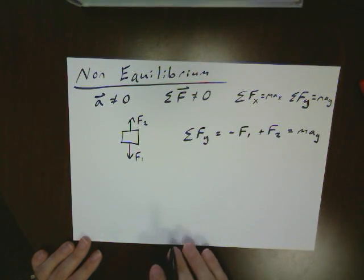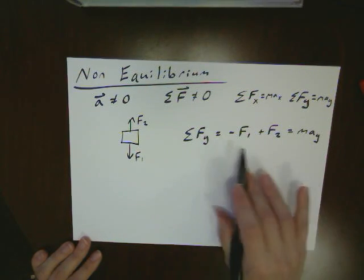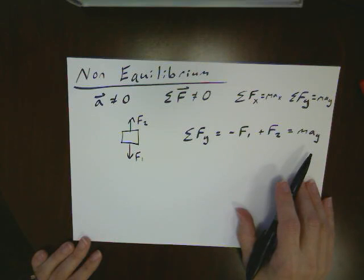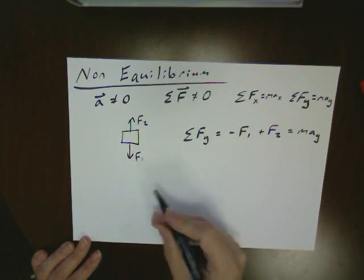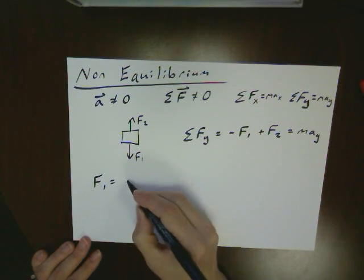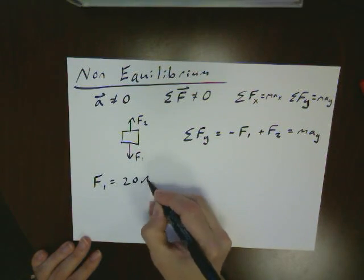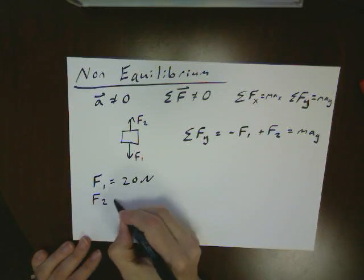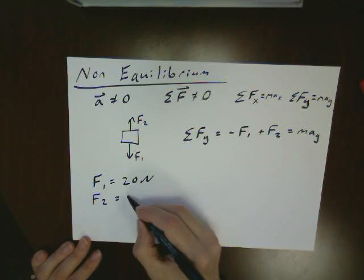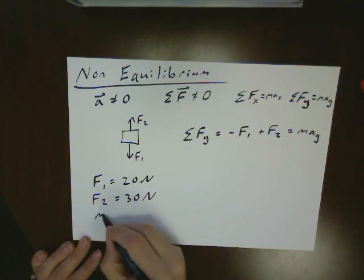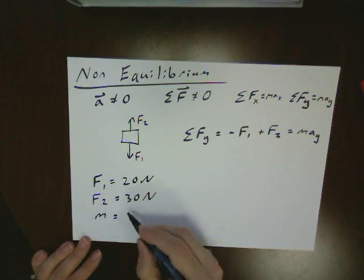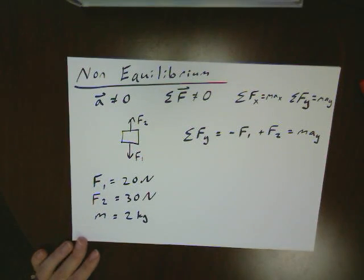Well, if I've got actual numbers, I can start solving for different things. There's four different unknowns, so if this is the only equation I'm working with, I need to have three of these things in order to be able to solve the problem. And it could be any of these three things that you're given. In this case, let's say we know that f1 is equal to 20 newtons, f2 is equal to 30 newtons, and the mass is equal to 2 kilograms.